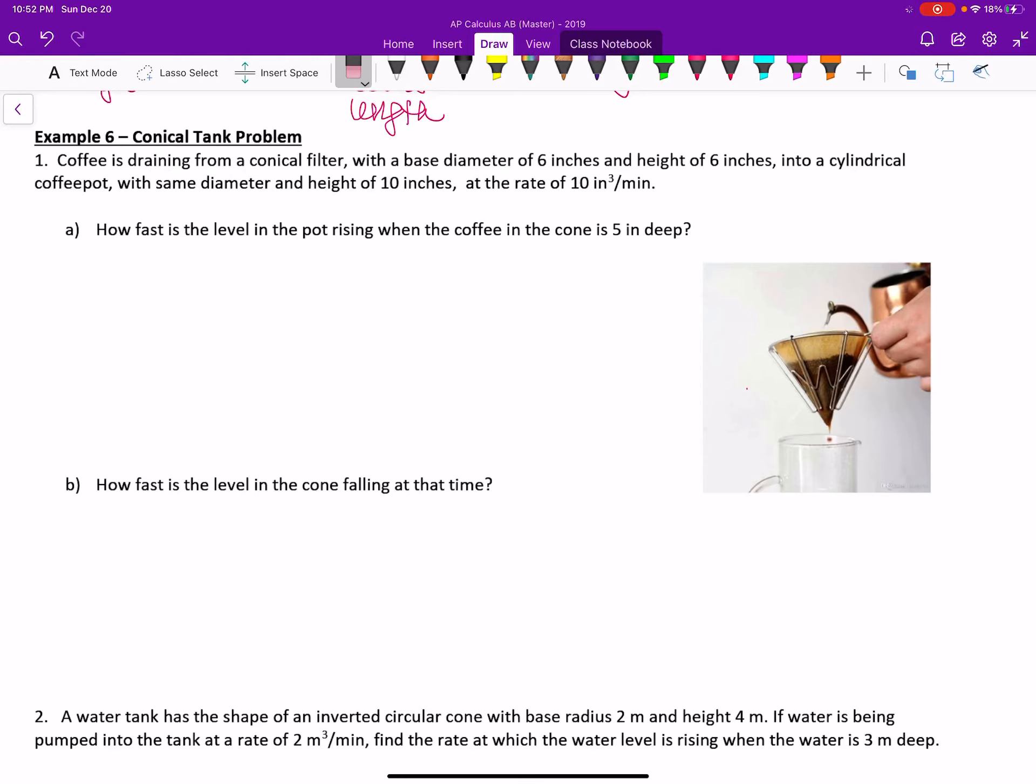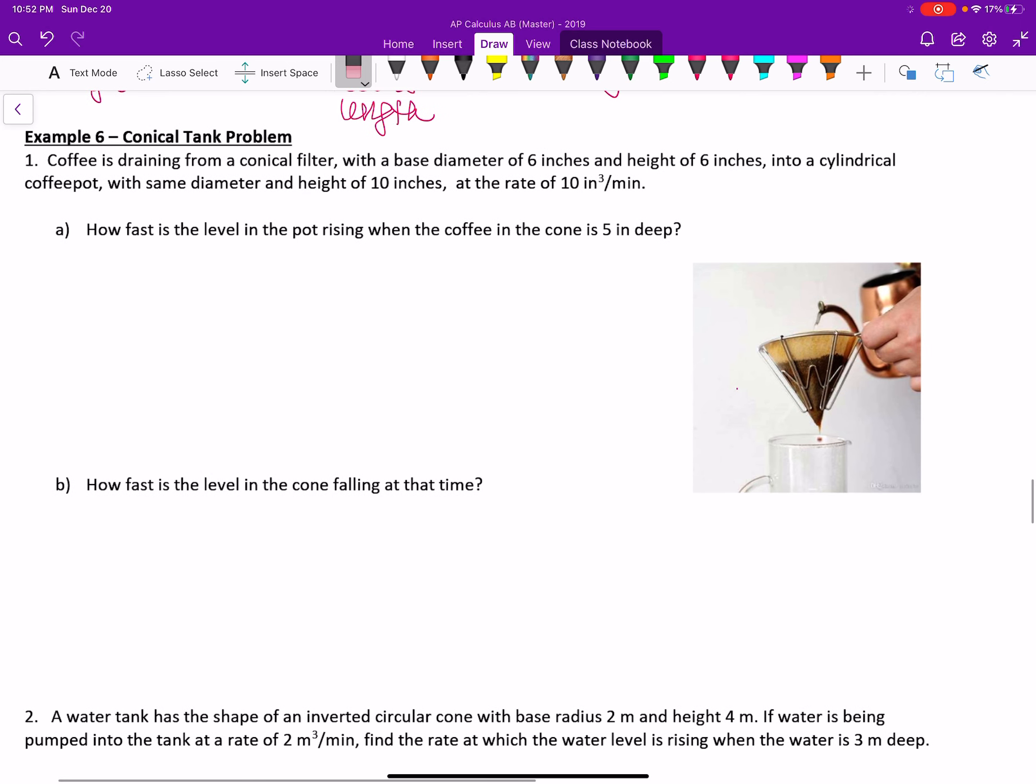Okay, so conical tank problems come up quite a bit. Here in example six, I apologize, there are many iterations of this problem and I've had to rewrite it many times just to get out what I was trying to hint at. But first, coffee is draining from a conical filter with a base diameter of six inches and a height of six inches into a cylindrical coffee pot with the same diameter and height of 10 inches.